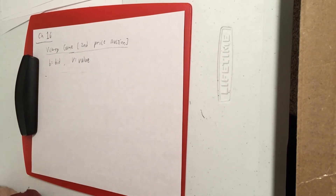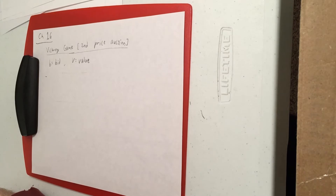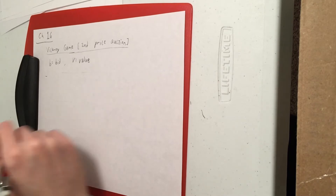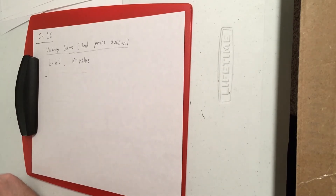So consider three possibilities: should you bid above your value, below your value, or equal to your value? In a first-price auction the answer might have been a little bit below your value, but the second-price auction is different, so that might alter our conclusions.